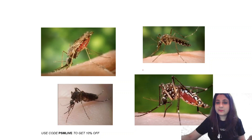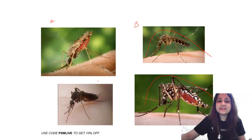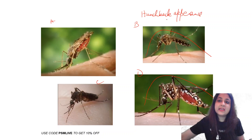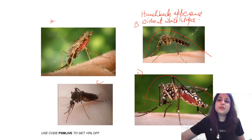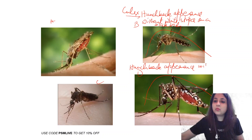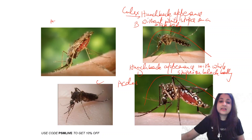To distinguish between mosquitoes, first look for a hunchback appearance. In options B and D, both show a hunchback appearance. If it is a hunchback appearance without white stripes on a black body, that is Culex. If it is a hunchback appearance with white stripes on a black body, that becomes Aedes — also known as the tiger mosquito.